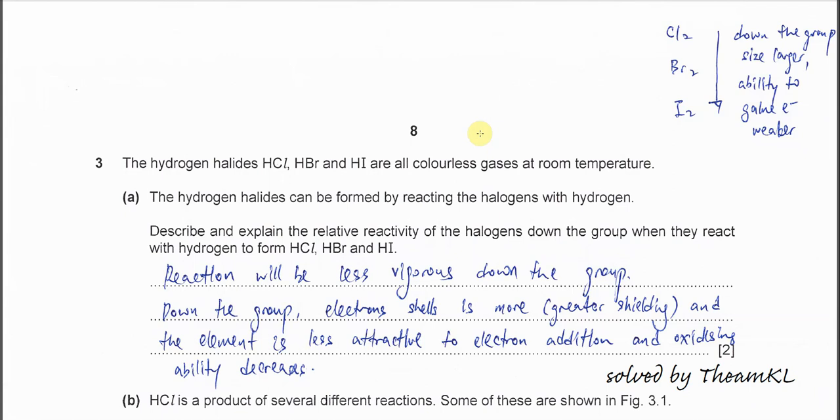Question 3. Hydrogen halides HCl, HBr, and HI are all colorless gases. Hydrogen halides can form by reacting the halogen with hydrogen. Describe and explain the relative reactivity of halogens down the group.